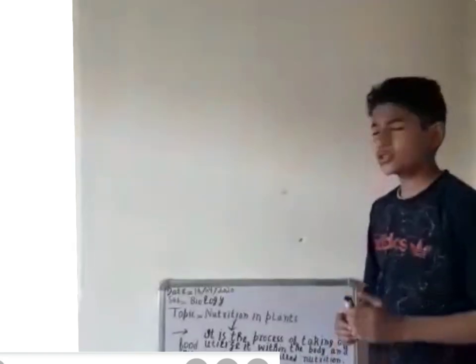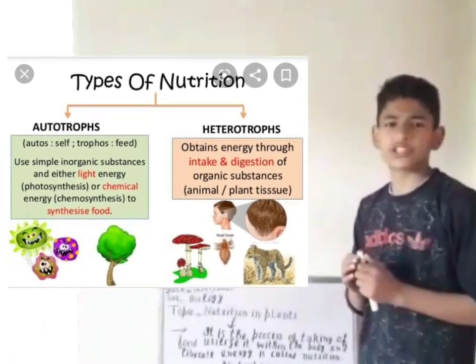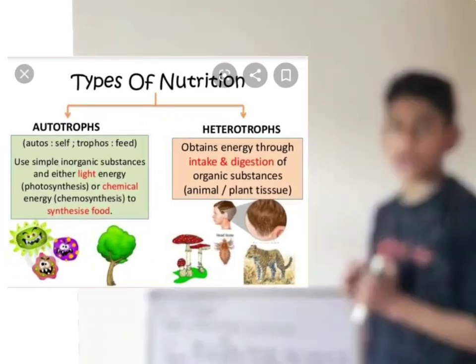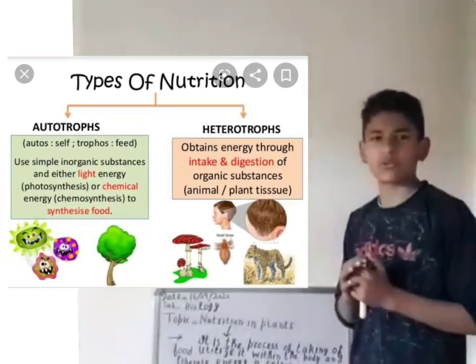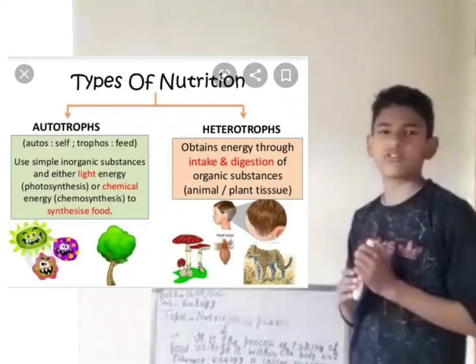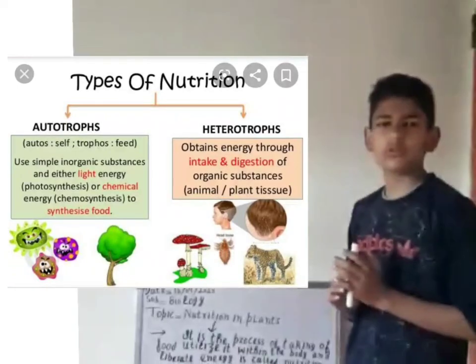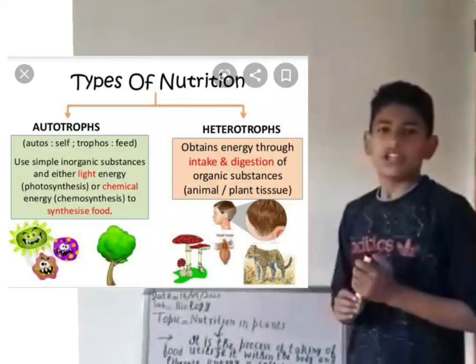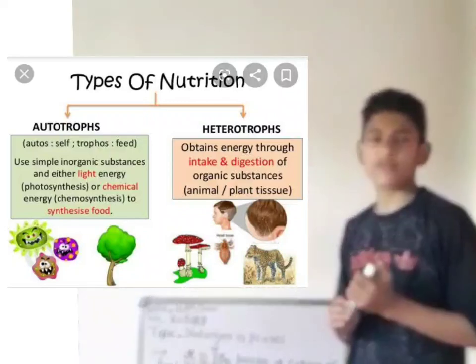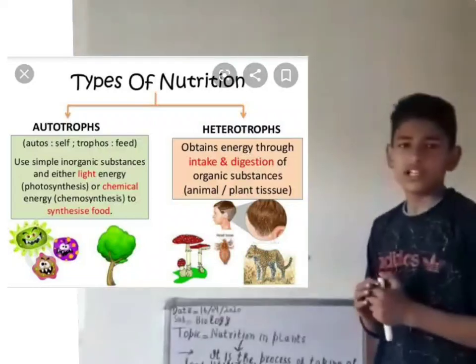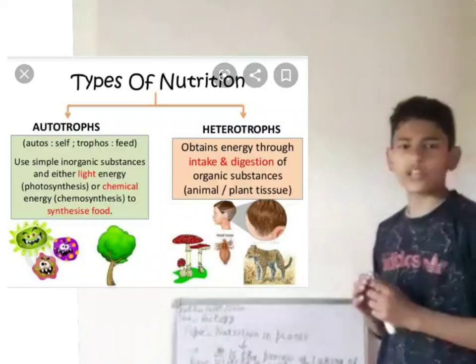By the process of photosynthesis. The word photo means light and synthesis means manufactured. Photosynthesis is a process by which plants can manufacture their own food by simple raw materials like carbon dioxide, water, sunlight, and chlorophyll.